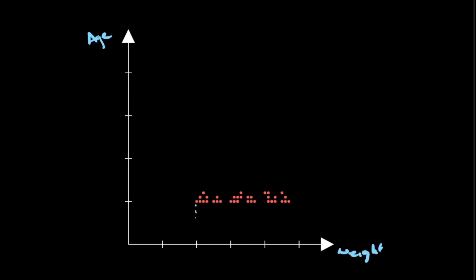The variance of this data set in the weight dimension is pretty high, whereas the variance of this data set in the age dimension is very low.